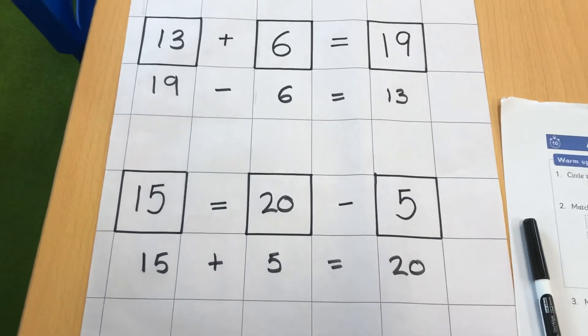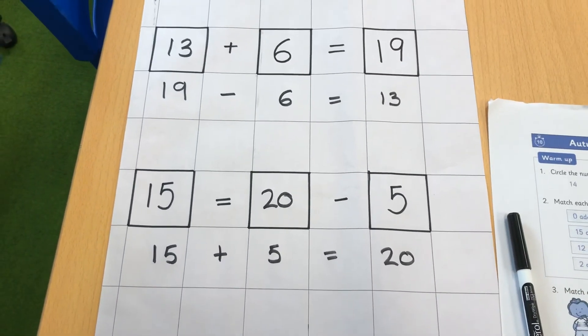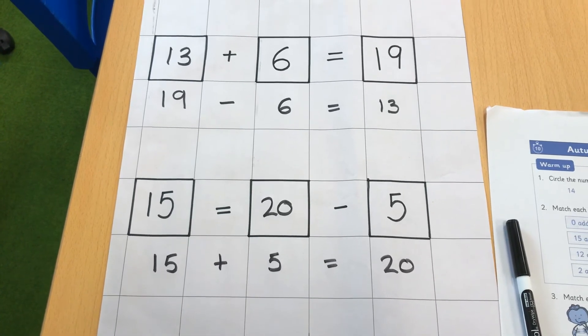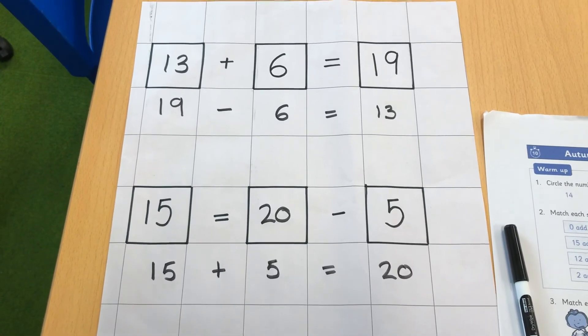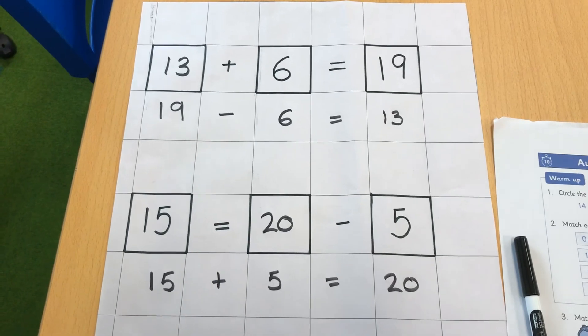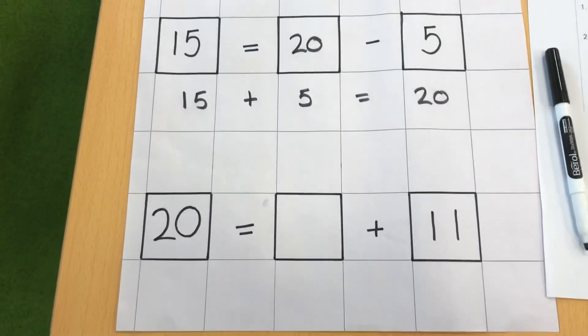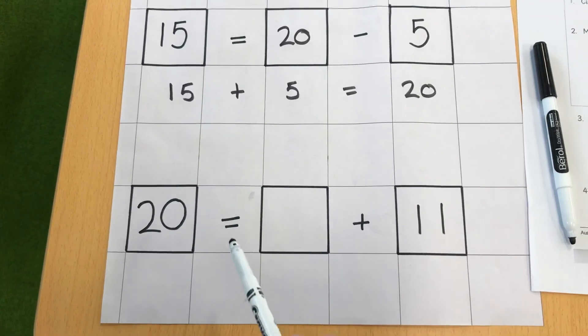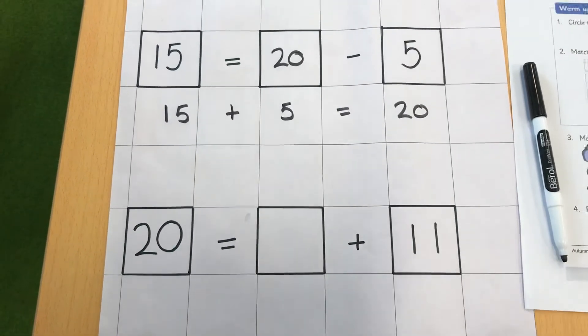Now on your weekly planner, you've got 4 number sentences. I want you to write the fact families for each of those number sentences. And then why not get an adult to test you and see if you can answer questions just like this one, remembering that this means the same as. Good luck, everyone.